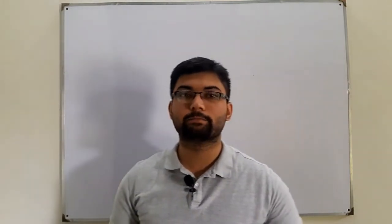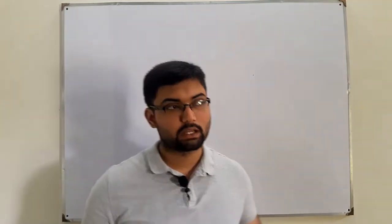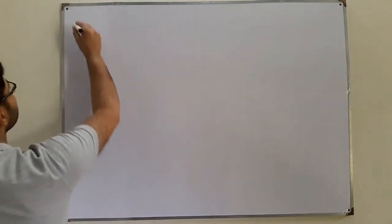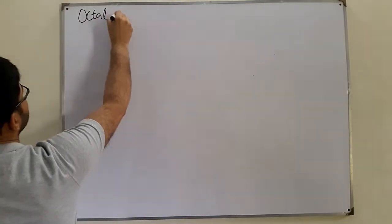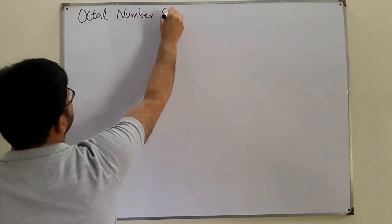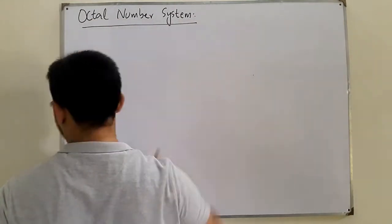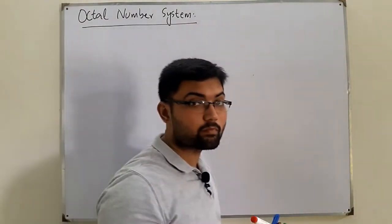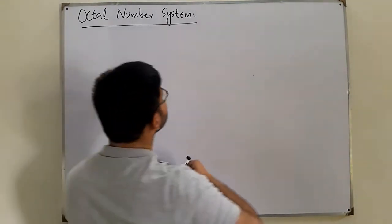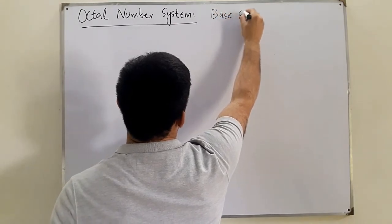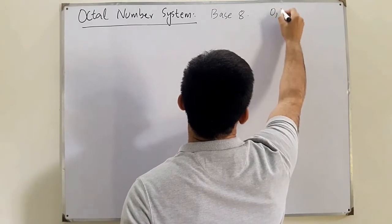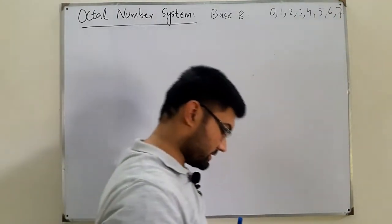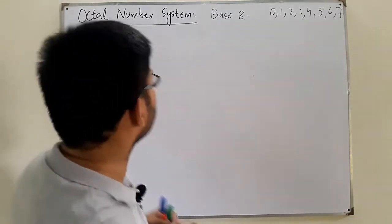Bismillahirrahmanirrahim. Assalamu alaikum. Salam Khan here with a new topic: the octal number system. We have seen the binary number system, and today we discuss the different operations in the octal number system. We begin with the octal number system, whose radix is 8 — a base-8 system, which means we have digits from 0 to 7.